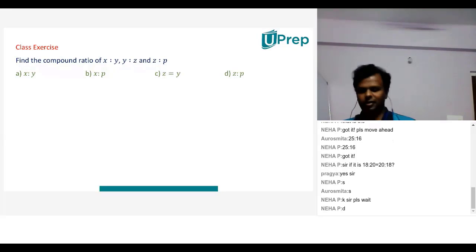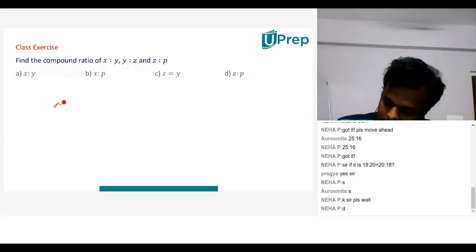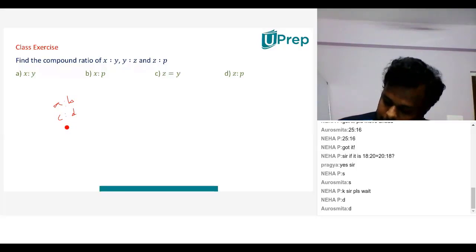So children here, if I have ratio A is to B, C is to D and E is to F. Children if I have 3 ratios, those who have joined late, please observe this.